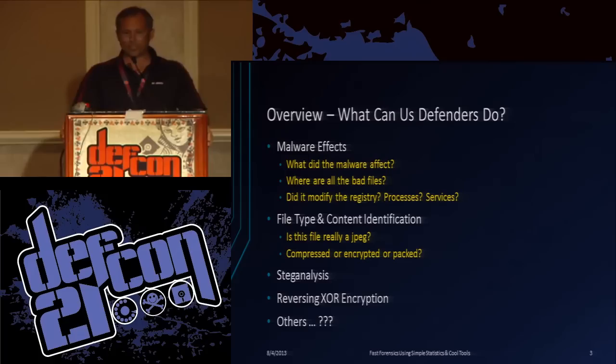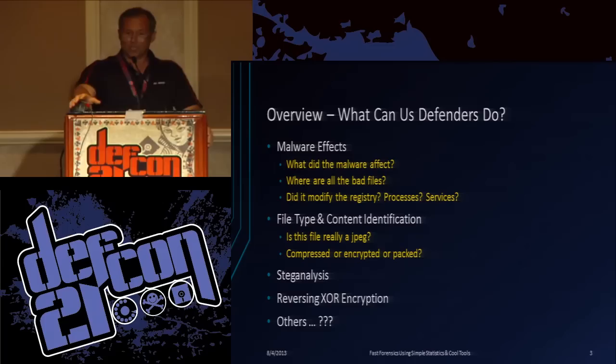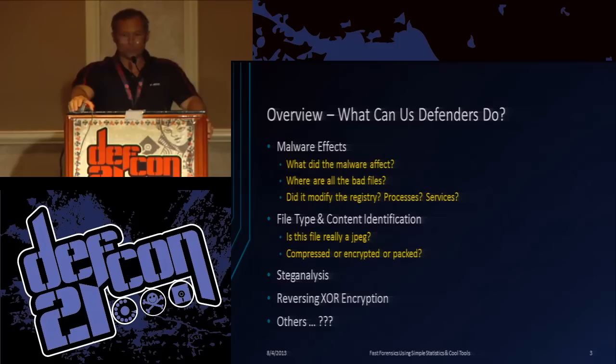So what can us defenders do? Sometimes you've had malware attack your system. It does stuff - drops files, changes registry keys, things like that. You want to know what happened. Another useful topic we'll talk about today is file content type identification. Just because a file has an extension doesn't mean that's what it is. We'll look a little deeper than just looking at the magic numbers. A little bit of steg analysis, a little bit of reversing XOR encryption. There are lots of uses for these various tools. There are some stego tools - these are all on the CD.